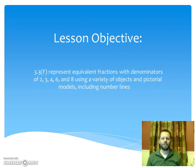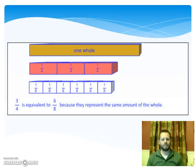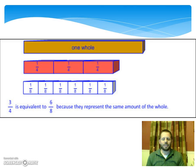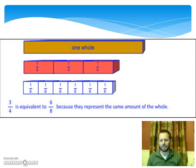Today's lesson objective is 3.3f: represent equivalent fractions with denominators of 2, 3, 4, 6, and 8 using a variety of objects and pictorial models including number lines. We're going to be looking at multiple representations of ways that we can look at equivalent fractions using a variety of objects, pictures, models, and things that we can use to represent these fractions.